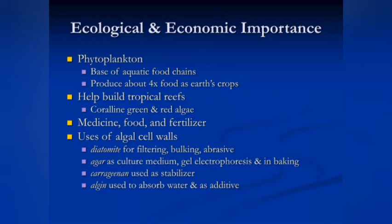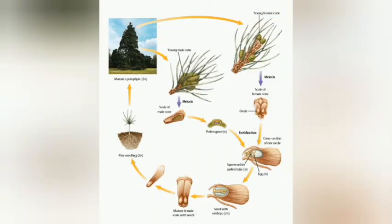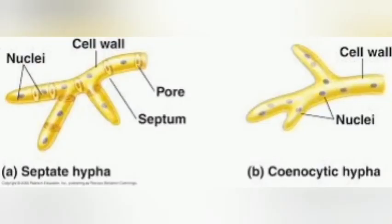Algae also act as human food. Algae acts as food for human beings — like Spirulina. Spirulina contains vitamins and minerals, amino acids, antioxidants, and essential fatty acids. These are the components of Spirulina.